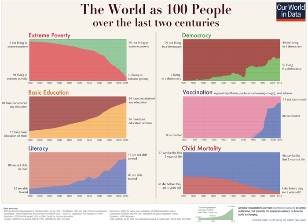Our World in Data is one of the largest scientific open access publications. It is made available as a public good. The entire publication is freely available, and all data published on the website is available for download. All visualizations created for the web publication are made available under a Creative Commons license.